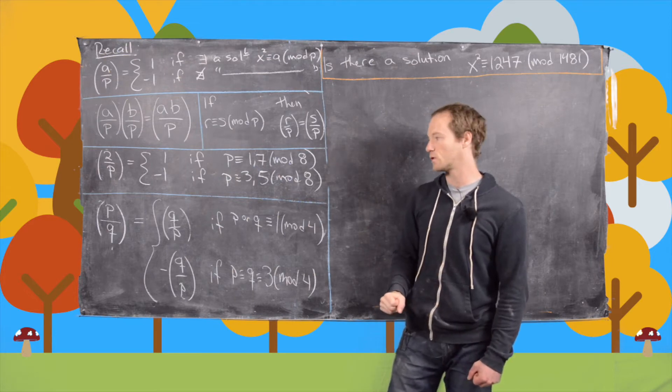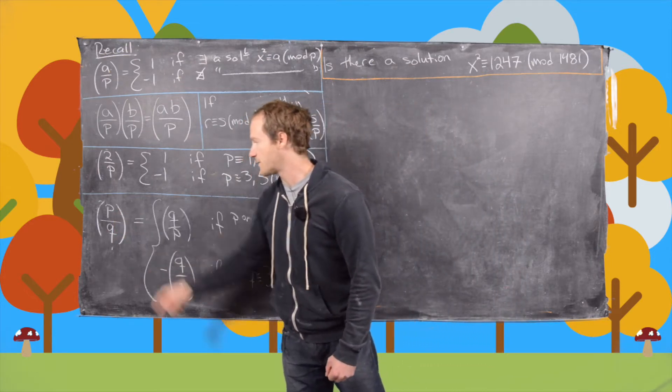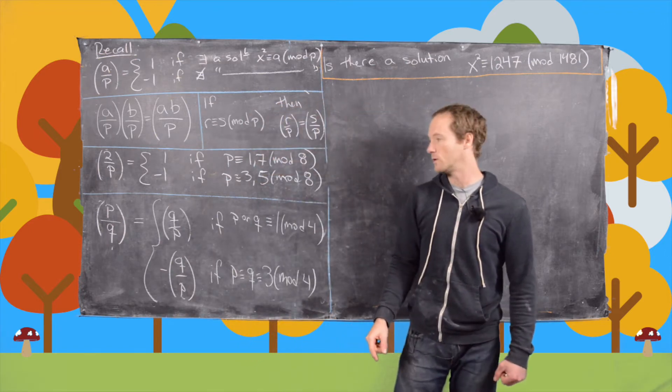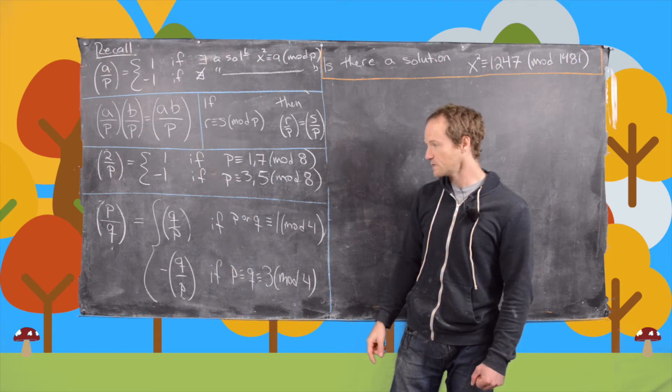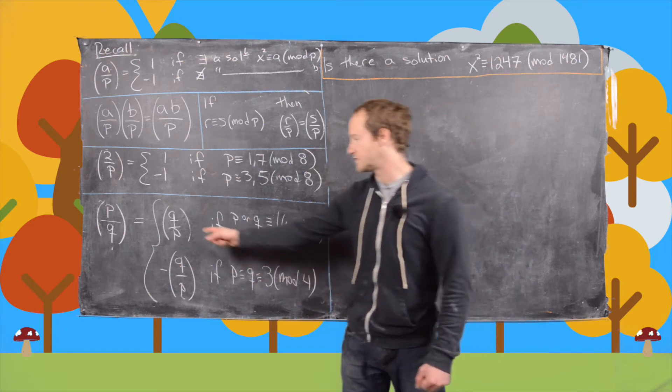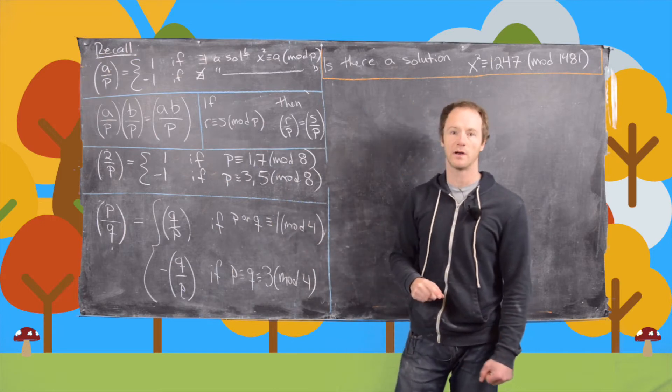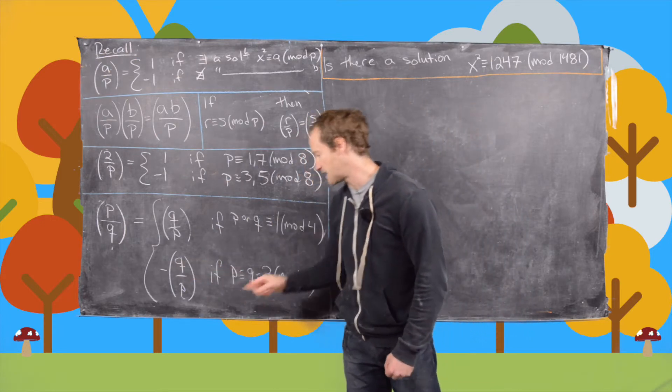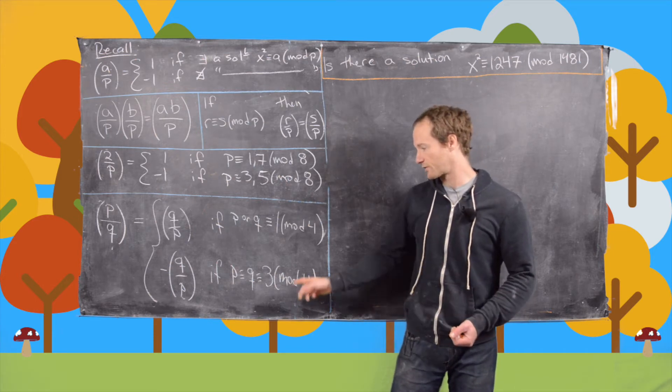And then we have finally our biggest tool, quadratic reciprocity, which tells us we can flip this p by q to q by p when they're both odd primes. And we do not pick up a minus sign if one of them is congruent to 1 mod 4, and we pick up a minus sign if they're both congruent to 3 mod 4.